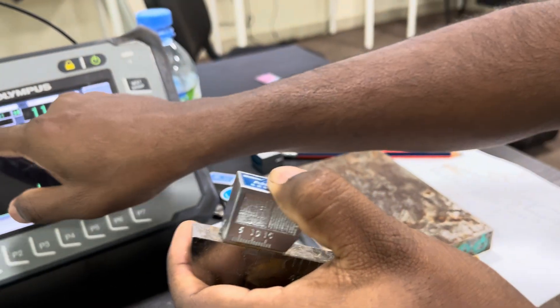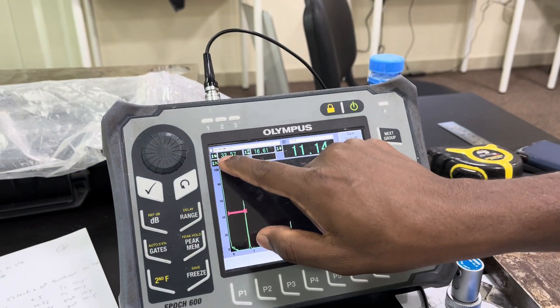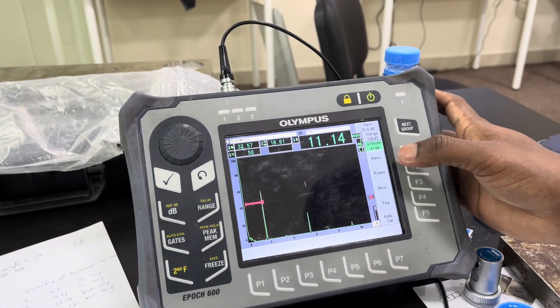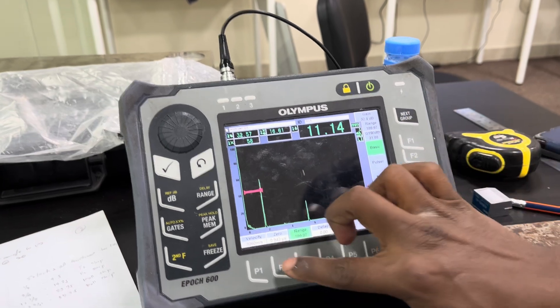Now it is coming at 32. The beam path is coming at 32, but our radius is 25, so I am going to set 25 by adjusting the zero value.